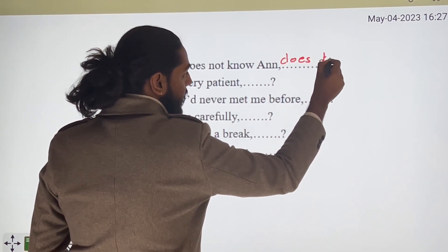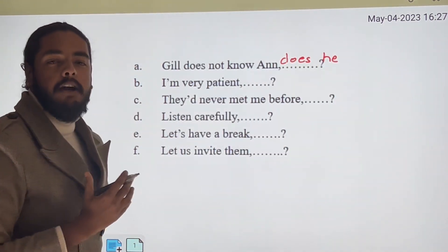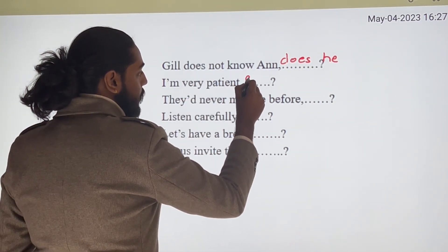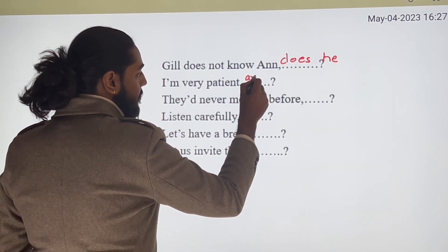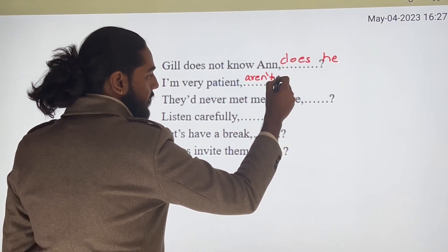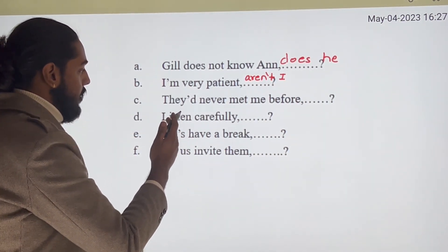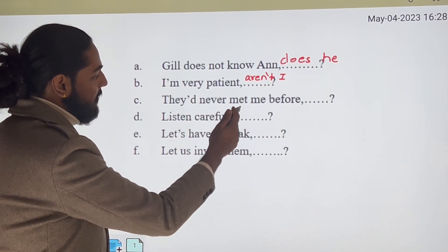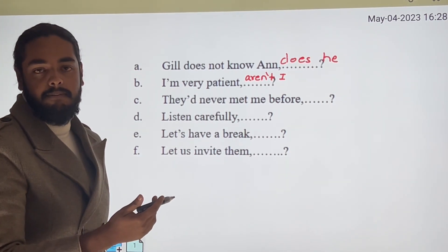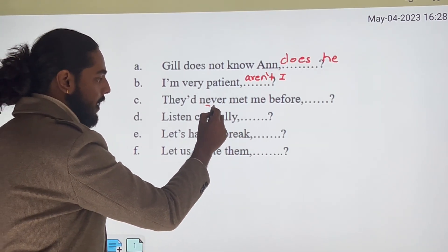Does he? — negative statement, positive tag. Next: 'I'm very patient, aren't I?' The question tag of 'am' is 'are,' so we use 'aren't I.' Next: 'They had never met me' — this is a negative statement, so we write the positive tag: 'had they?'